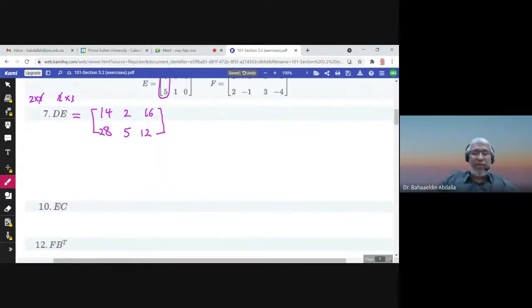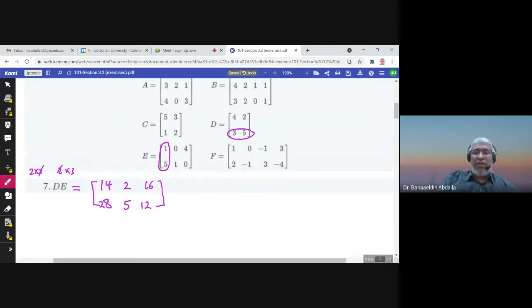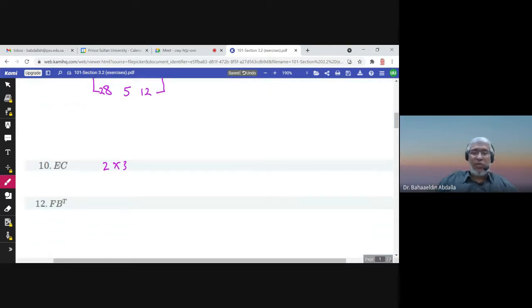E times C. E is 2 rows and 3 columns, multiply by C, which is 2 by 2. Can we multiply? No, it is not possible, not defined, because 3 is not equal to 2.